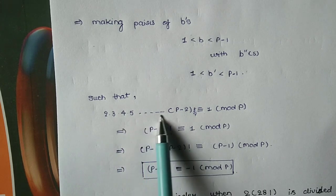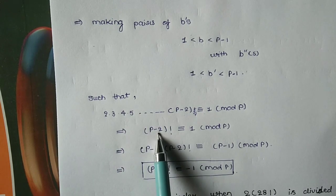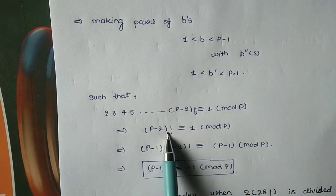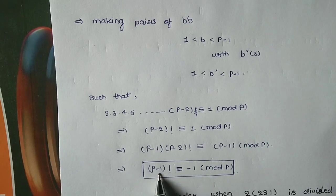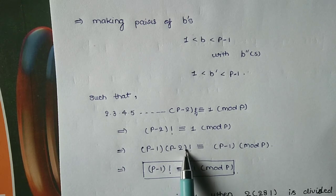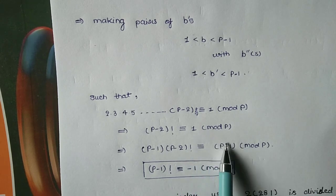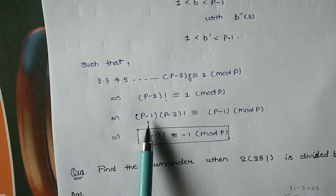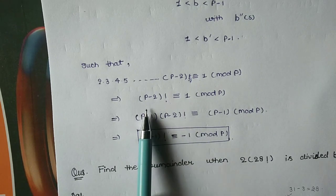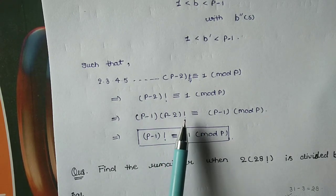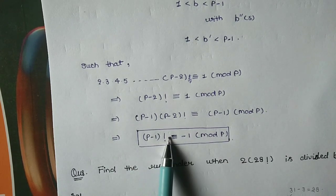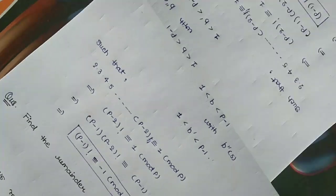Using this result with the factorial formula, (p-1)! can be written as (p-1) times the product 2·3···(p-2). Since that product is congruent to 1 mod p, we get (p-1)! ≡ (p-1) ≡ -1 mod p.